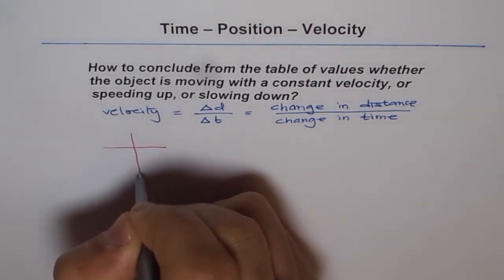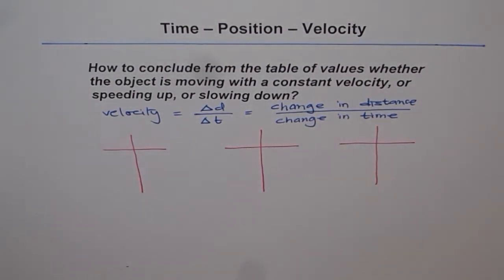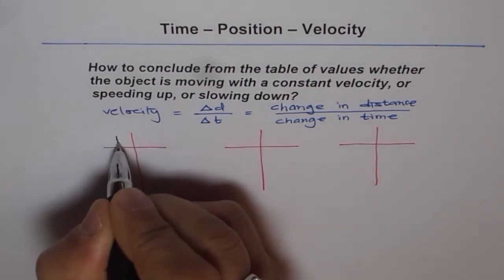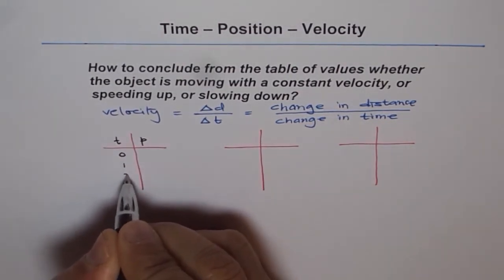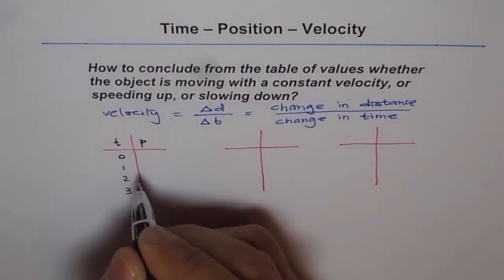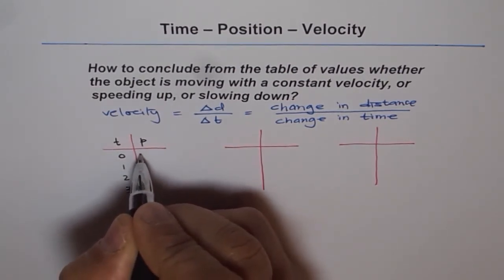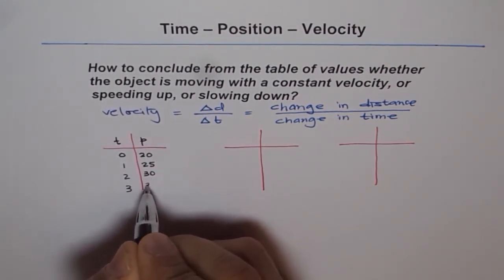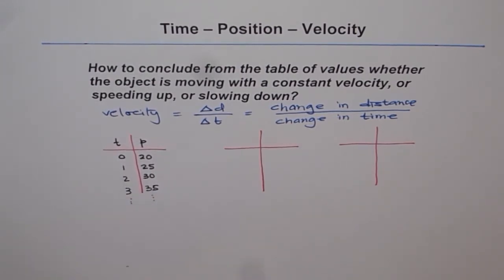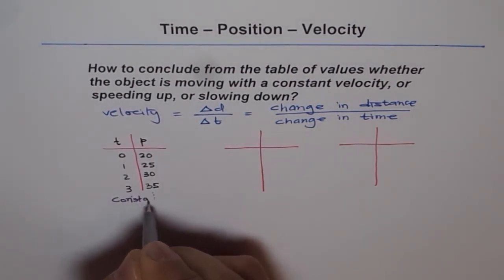So let me make three different tables to show this — Table 1, Table 2, and Table 3. In Table 1, we have time and position. Let's say time starts at 0, 1, 2, 3. The position changes at a constant rate: starting at 20, it changes by 5 units each time — so 25, 30, 35, and so on. As you can see, the velocity is constant. This refers to constant velocity.